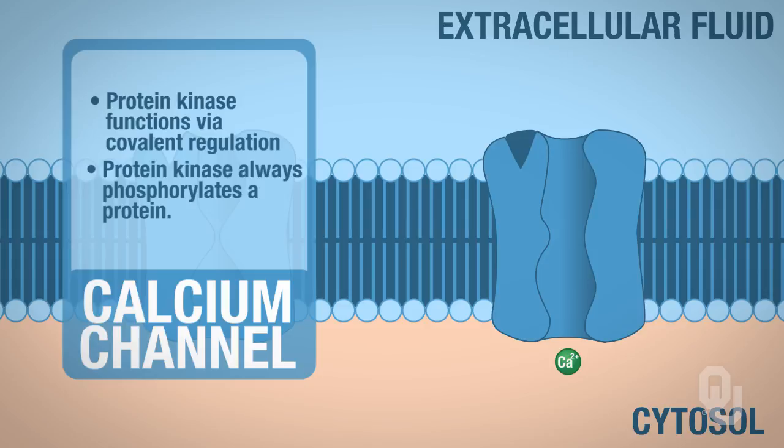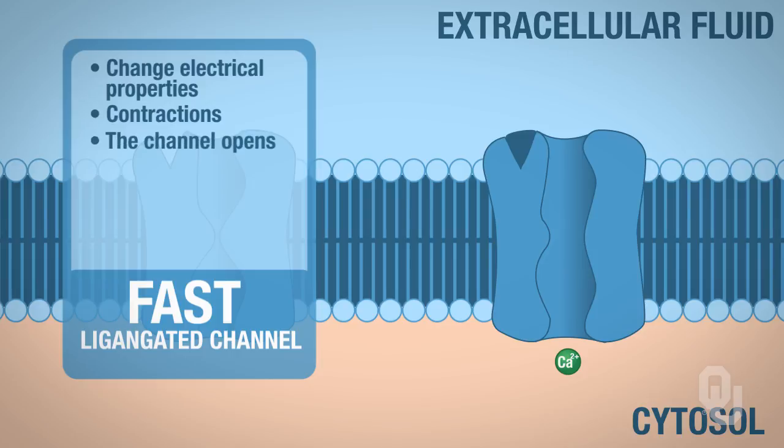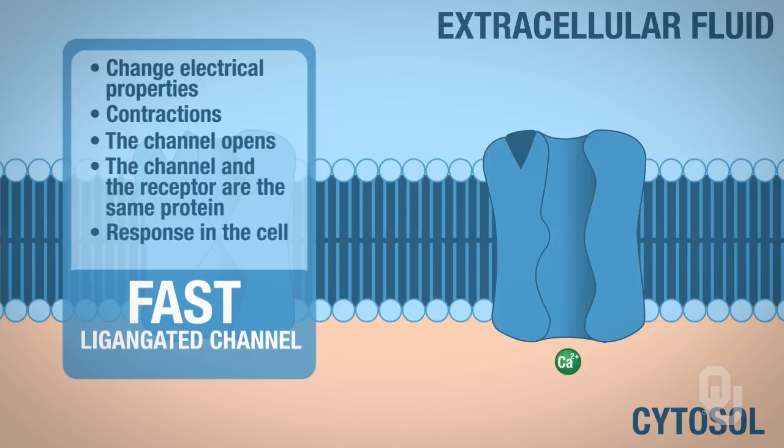So again, this is just to give you an idea of what a fast ligand-gated channel is and how it can change the properties within the cell. So you can change electrical properties, you can have contraction occur. It just depends on what specific tissue that you're in. And we haven't gotten to what tissue we're in yet. Right now it's just understanding what a membrane-bound mediated response is and the fact that you can have these fast ligand-gated channels. The channel will always open, the channel and the receptor are the same protein, and you get some sort of response in the cell.